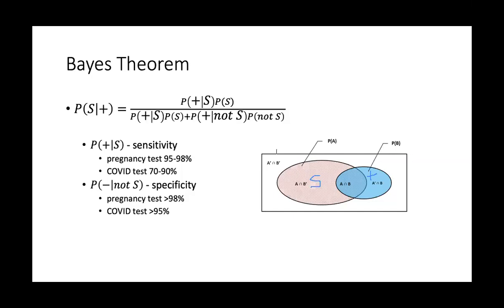Of course, you would want both of these to be very high. If you are sick or have the condition, you would want the test to come out positive almost all the time, and if you do not have the condition, you would want the test to be negative almost all the time. Many of us have seen something like a pregnancy test — you go to a drugstore and it tests for the presence of a particular hormone associated with pregnancy. If you wait long enough, these tests are actually very good, with sensitivity of like 95 to 98% and specificity also very high.